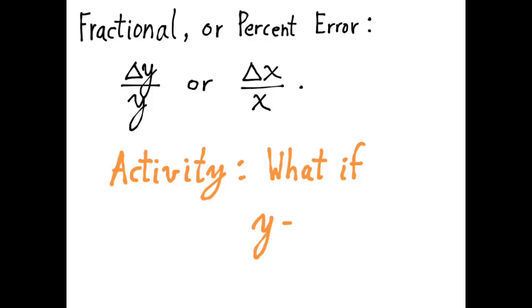So here's an activity that you can try. Suppose you have a relationship between y and x that's just a power law relationship: y equals ax to the fifth where a is a constant. Your challenge is to find a simple relation between delta y over y, the fractional error in y, and delta x over x, the fractional error in x. And I'll give you a hint. The fractional error in y is just equal to some constant times the fractional error in x. See if you could find that constant.